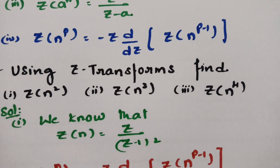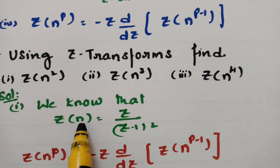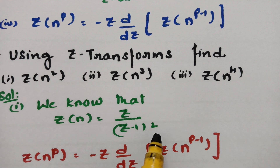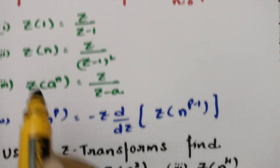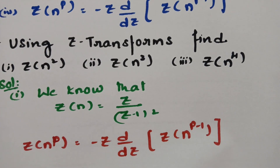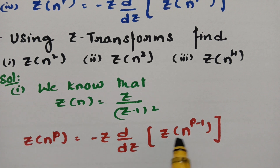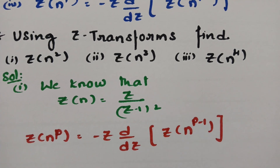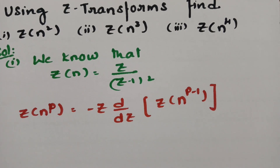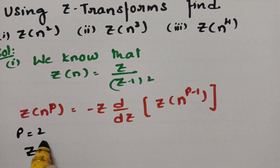For solution one, we need Z of n square. We know that Z of n is equal to z by z minus 1 whole square. We also have the standard function that Z of n to the power p is equal to minus z into d by dz of Z of n to the power p minus 1. So now I am going to substitute p equal to 2 in the standard function.